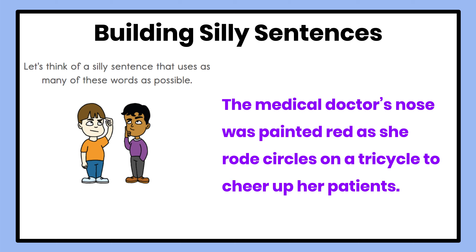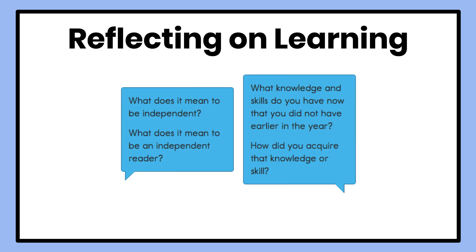Now it's your turn to write a handful of silly sentences. Try to use as many of our CAL and CLE words as possible, and also try to add in some possessive words with an S apostrophe or an apostrophe S. Once you've written a handful of silly sentences, read them out loud to someone at home. Let's reflect on our learning: What does it mean to be independent? What knowledge and skills do you have now that you did not have earlier in the year, and how did you acquire that knowledge or skill? Great job today, second graders — see you again tomorrow.